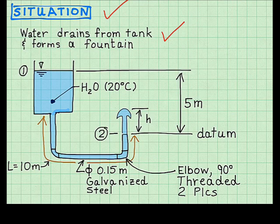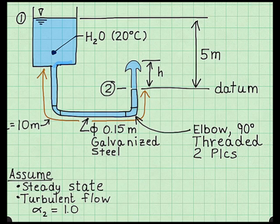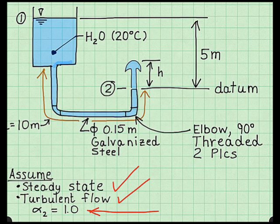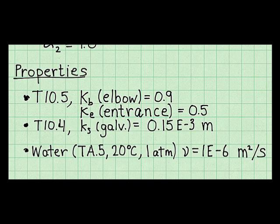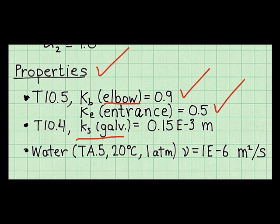To create my documentation, I describe the situation in one sentence, then sketch the system diagram and add relevant information to it. I assume steady state, meaning properties are not changing with time. I assume turbulent flow, which means kinetic energy factors everywhere will be 1.0. The minor loss coefficient for the elbow, the minor loss coefficient for the entrance, and the sand roughness height value all came from table 10.5.